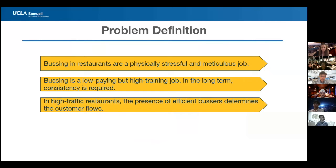Our problem definition revolves around the problem of busing. Busing in restaurants is a physical, stressful, and meticulous job. It is a low-paying but high-training job. In the long-term, consistency is required. In high-traffic restaurants, the presence of efficient bussers determines the customer flow. We are trying to automate the whole process of busing.